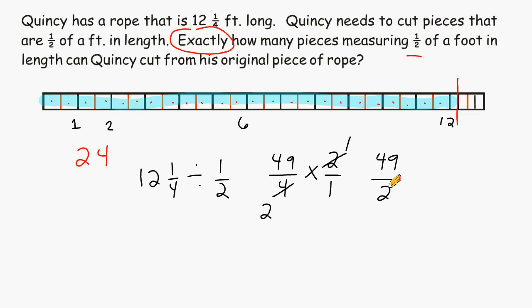And if I take forty-nine and divide it by two, that would give us twenty-four and one-half. But remember, we have to figure out exactly how many pieces that are one-half of a foot. So we could get twenty-four pieces that are half of a foot, but then this half here means that we can only get half of that half. And one-half of a half is one-quarter, and that's this little leftover piece here that's too small to constitute a length of one-half. So we do not need the fractional part of the mixed number. We are only concerned with the whole number of the mixed number in this case.